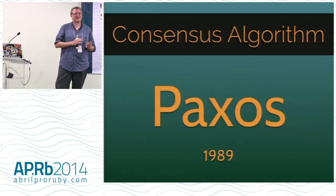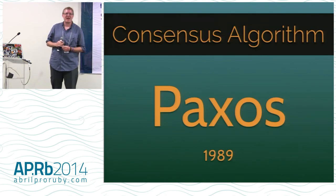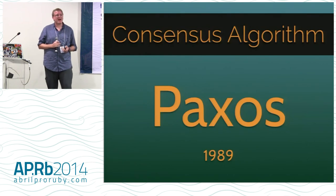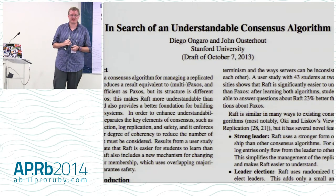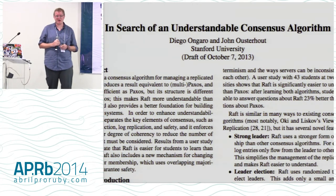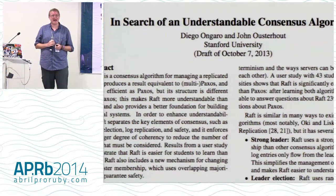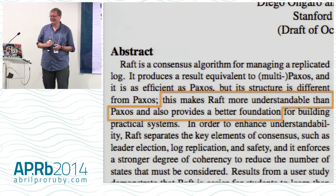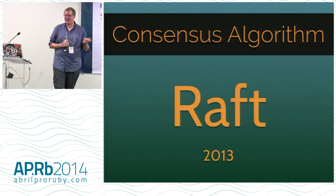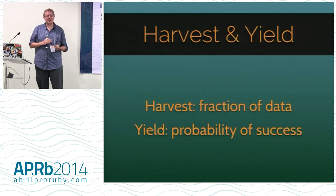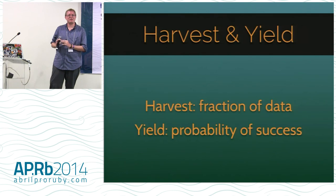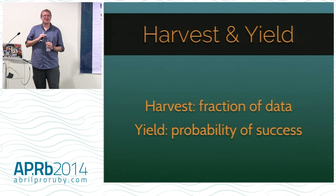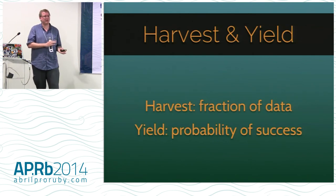Consistent partition tolerant systems are built using consensus algorithms. One from about 25 years ago is called Paxos, but it has a big problem — nobody knows how it works. Diego Ongaro and John Ousterhout designed a new algorithm called Raft which you can actually comprehend, released just last year with a lot of great resources. Two big concepts are harvest and yield — the other side of the CAP theorem. Harvest is how much data you get; yield is your probability that a request will succeed with any harvest at all. An AP system sacrifices harvest — you'll get less data. A CP system sacrifices yield — you may just get an error.